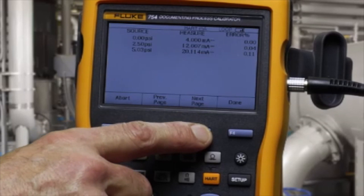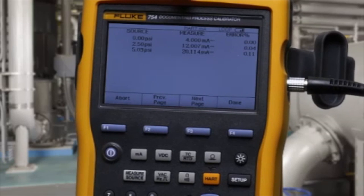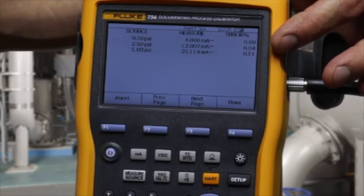Apply. Test is complete. You see the applied pressure measured milliamp. In this case, all the errors are less than 0.25% and the test passes.